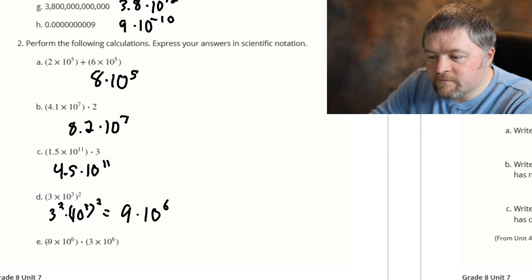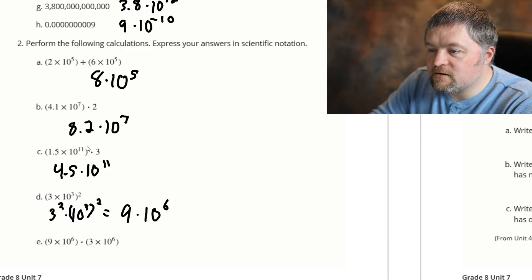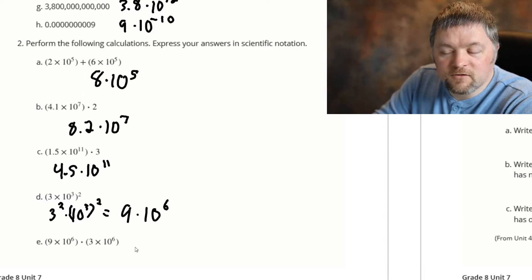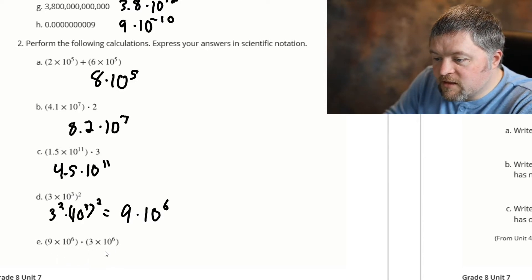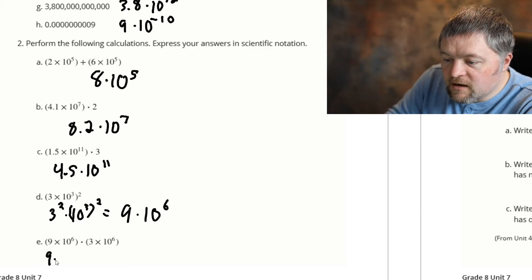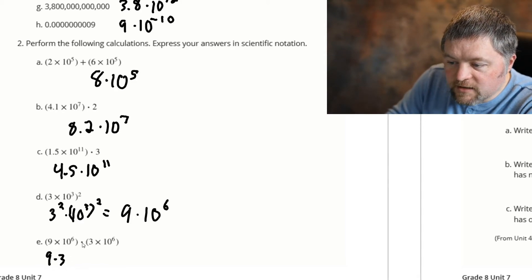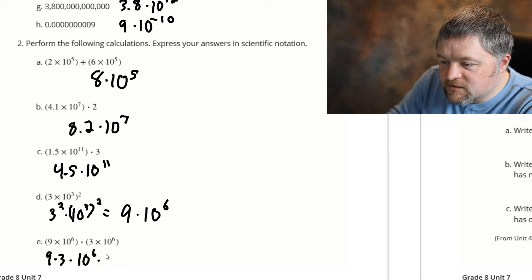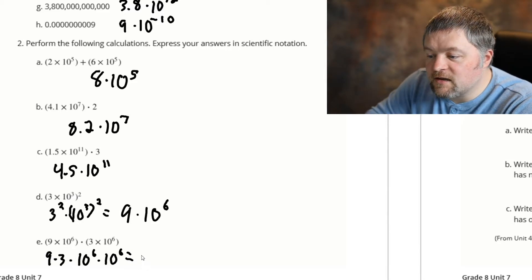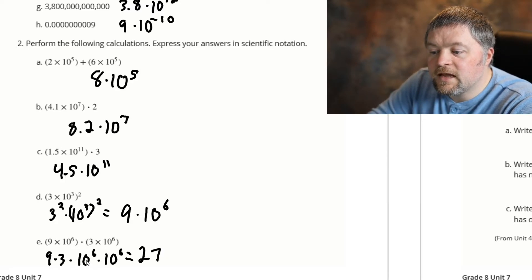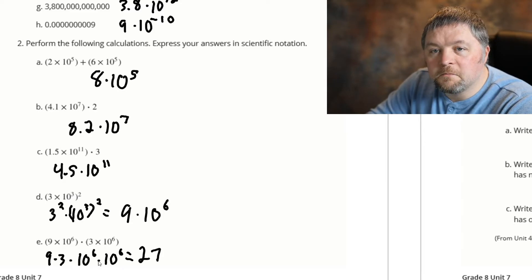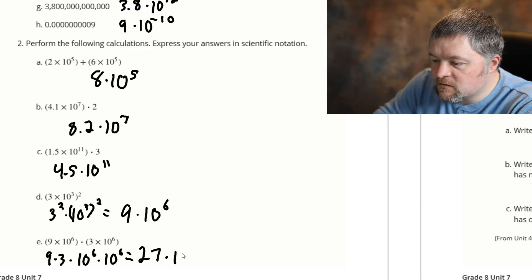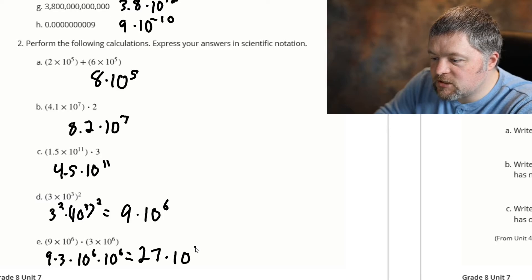Multiplying again. The powers of ten are the same, but we are multiplying this time so it is not going to be the same as the upper one. I'm going to rewrite this with things grouped differently: 9 times 3, grouping that 9 and 3 together, times 10 to the power of 6, times 10 to the power of 6. So we have 9 times 3, which is 27. Then 10 to the power of 6 times 10 to the power of 6 — when we are multiplying like bases we add the exponents — 10 to the power of 6 plus 6, which is 12.